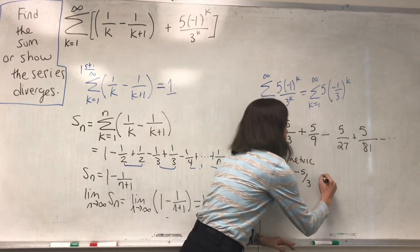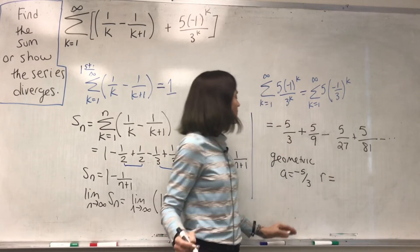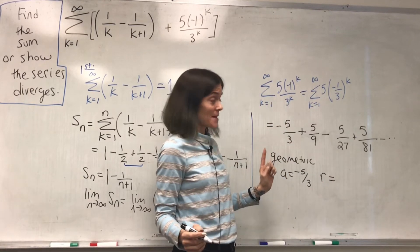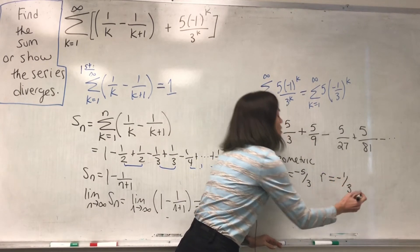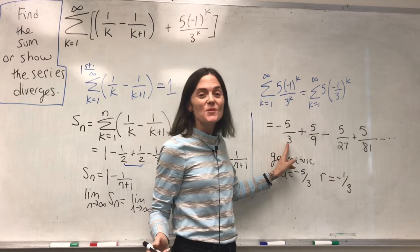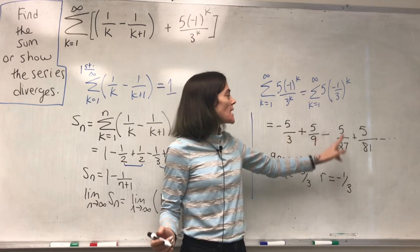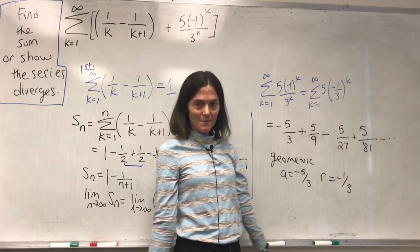My ratio here for this geometric series, well, we see here it's negative 1 third. But also, we see it looking at the terms. As I move from one term to the next, I am multiplying by negative 1 third.